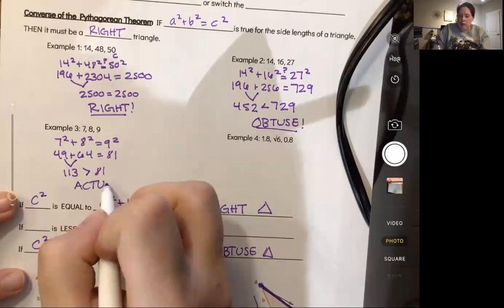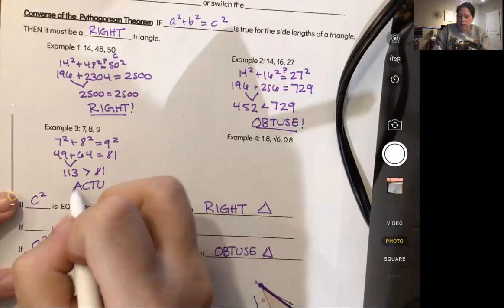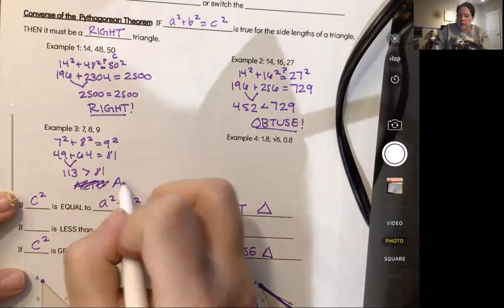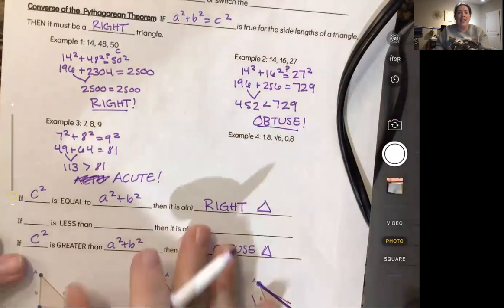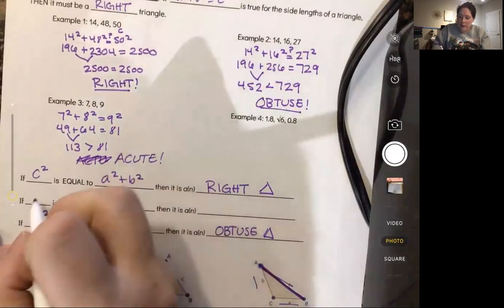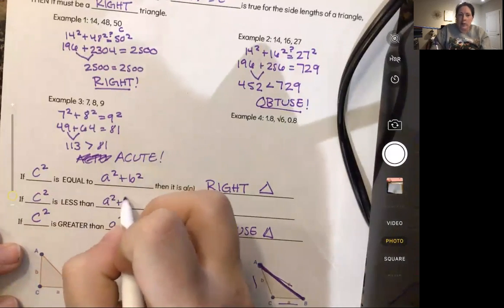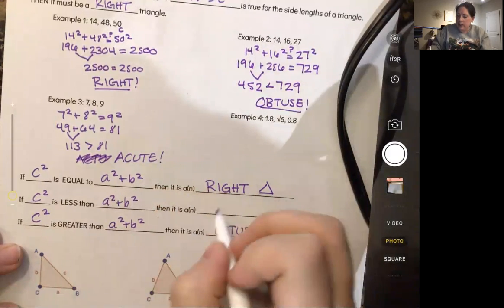I can't spell acute apparently. So if c squared is less than a squared plus b squared, it is an acute triangle where all the angles are less than 90 degrees.